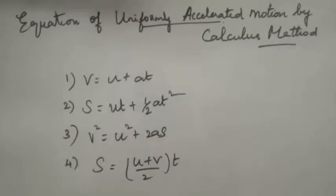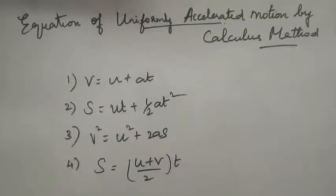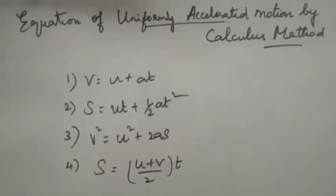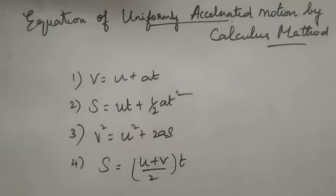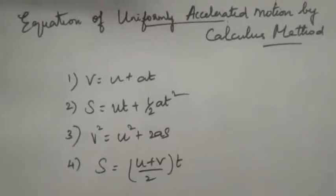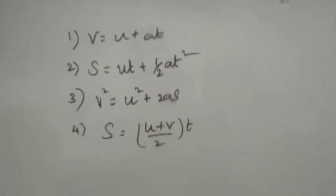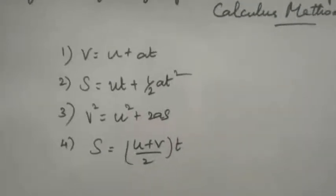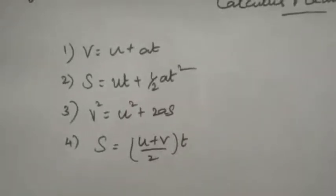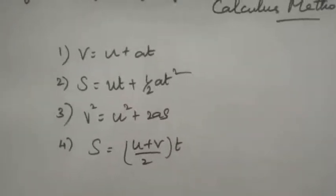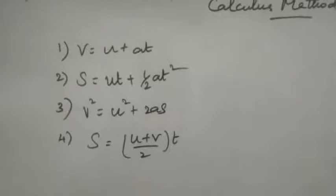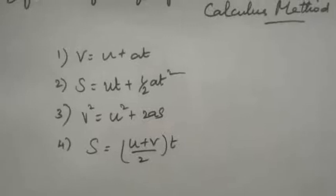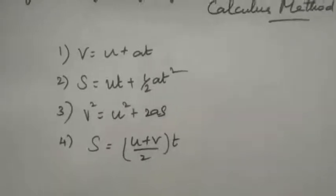So in kinematics, we have the motion and some equations related to the motion. Using the calculus method, you are going to derive these equations. The four basic equations related to motion are: first, v is equal to u plus at; second, s is equal to ut plus half at square; third, v square is equal to u square plus 2as; and the fourth equation is s is equal to u plus v by 2 into t.